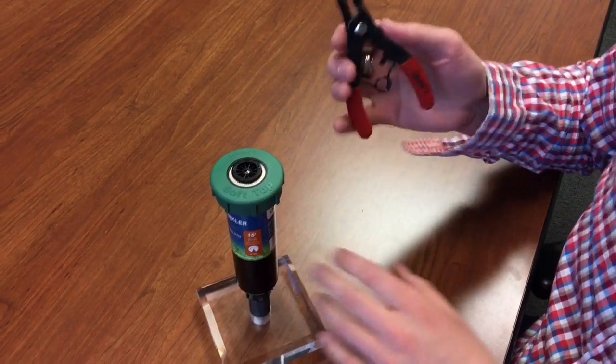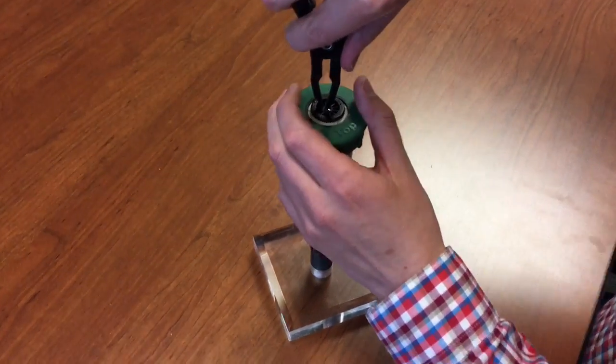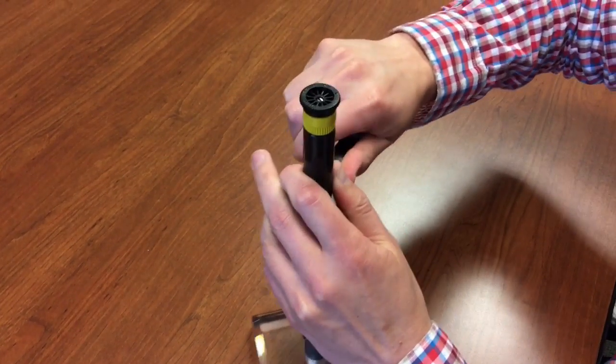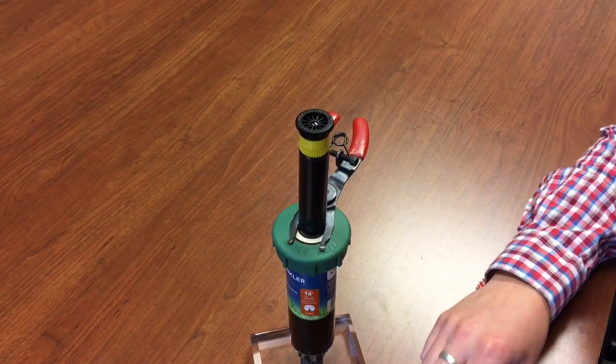The way to do that is you would get your tool here for pop-ups. You can just insert that on the top, pull it up, and then it clamps on the bottom and will hold the nozzle up so you can make any adjustments.